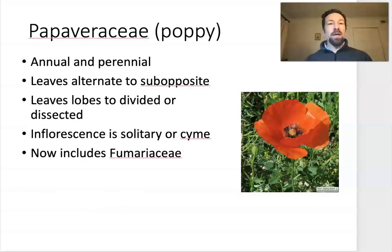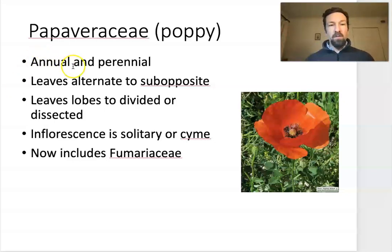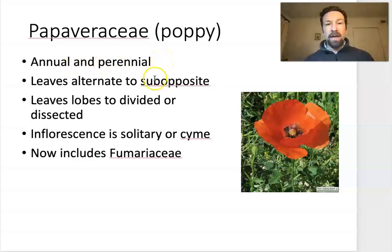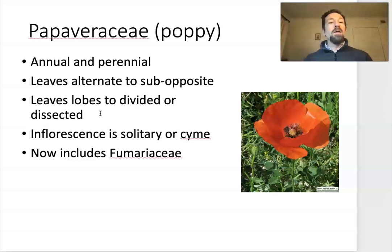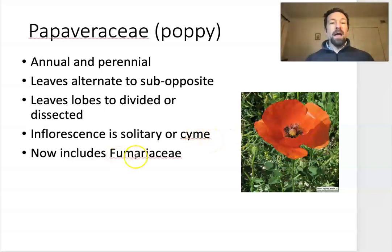We will start by looking at the poppy family, Papaveraceae. Poppies are typically annuals or perennials, so not woody, and they last either for one year or multiple years. The leaves are usually alternate, but they can be sub-opposite — meaning approximately opposite, but the leaves aren't coming off perfectly across from one another. As we already said for the order, leaves for this family tend to be lobed, divided, or dissected. The flowers are either solitary, as pictured here, or in a cyme, which we've already talked about.